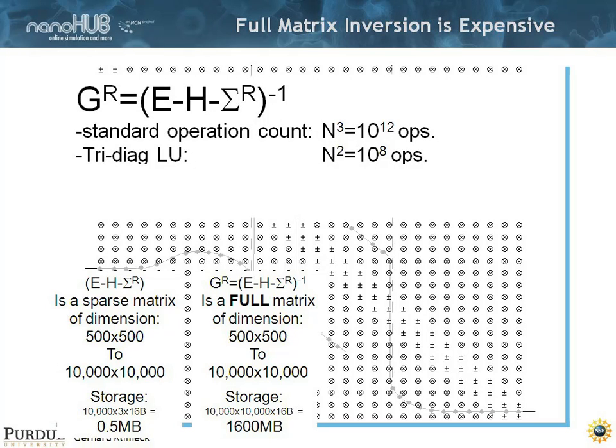It would be detrimentally expensive to compute. If you had a standard operation count to do this inverse and you do this in n cubed, you might use 10 to the 12 operations. If you used a tridiagonal LU approximation which scales as n squared, you might have 10 to the 8 operations.